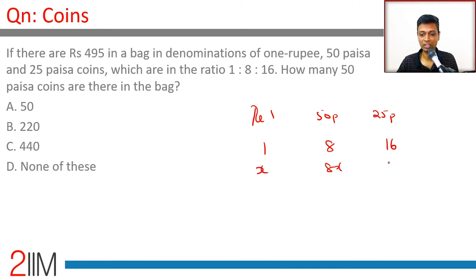The amount of money would be: x, 8x into 1/2, and 16x into 1/4. Since 50p is half a rupee and 25p is one-fourth of a rupee, we get x plus 4x plus 4x equals 495.